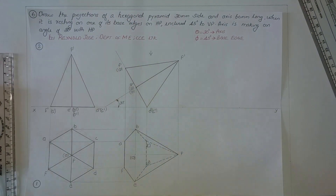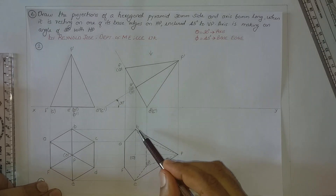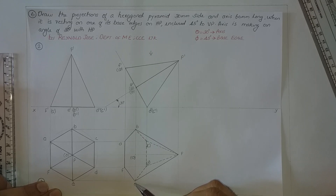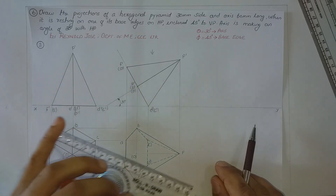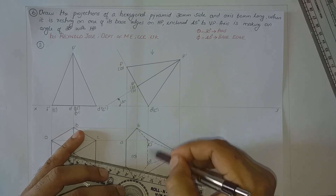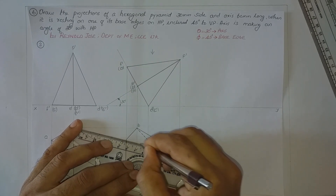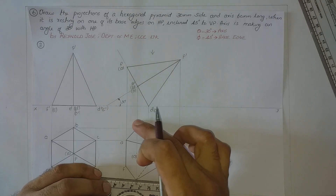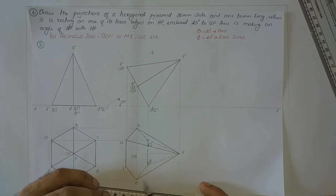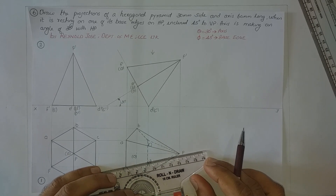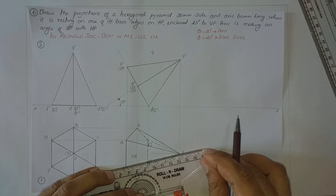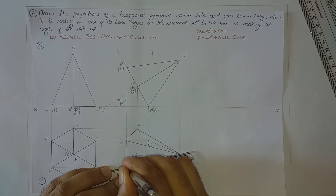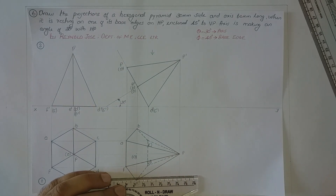We have drawn all invisible edges. Checking all base edges: AB, BC, CD, DE, EF, and FA — all base edges are drawn. Now checking slanting edges: PA has not been drawn yet. PA is crossing CD which is invisible, so PA will be visible. PB is here, PC is here, PD is here. For PF — PF is crossing CD, and since CD is invisible, PF will also be visible. Now we shall draw the axis as well.